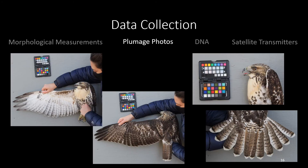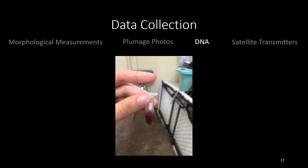Our second form of phenotypic data we are collecting includes plumage photos. Each photo shoot included ventral and dorsal wing-out shots, a head profile shot, a tail spread shot, and close-ups of upper and undertail coverts. For our genotypic data, we are collecting blood samples from every bird. The DNA from a blood sample will be sequenced and then, using specific molecular markers, will be compared to reference breeding populations.